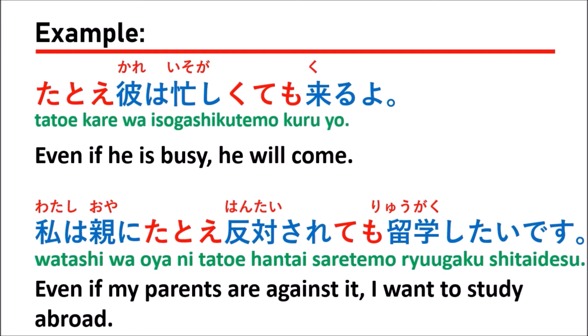In this example, you can see they use the verb. The verb here is 反対する. We use the passive form 反対される, then cut the る and follow by でも, giving us 反対されても. So the sentence means: even if my parents are against it, I want to study abroad — 留学したいです.